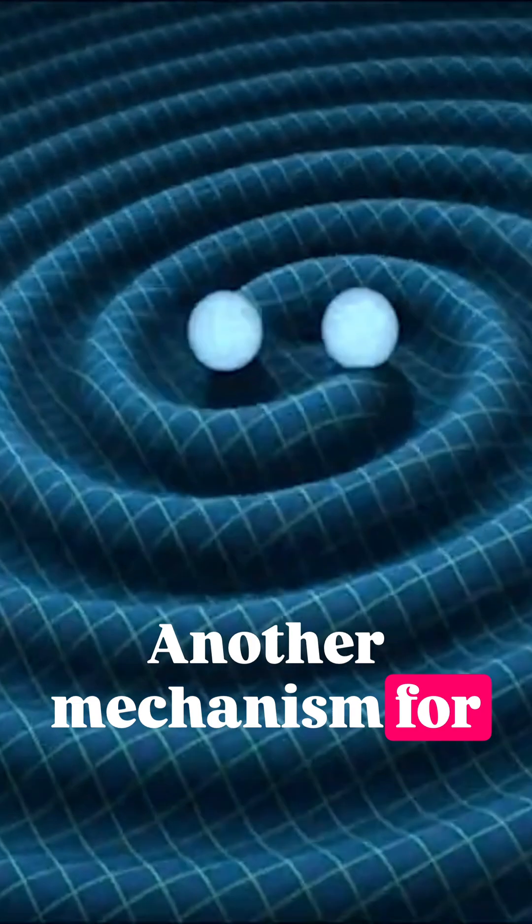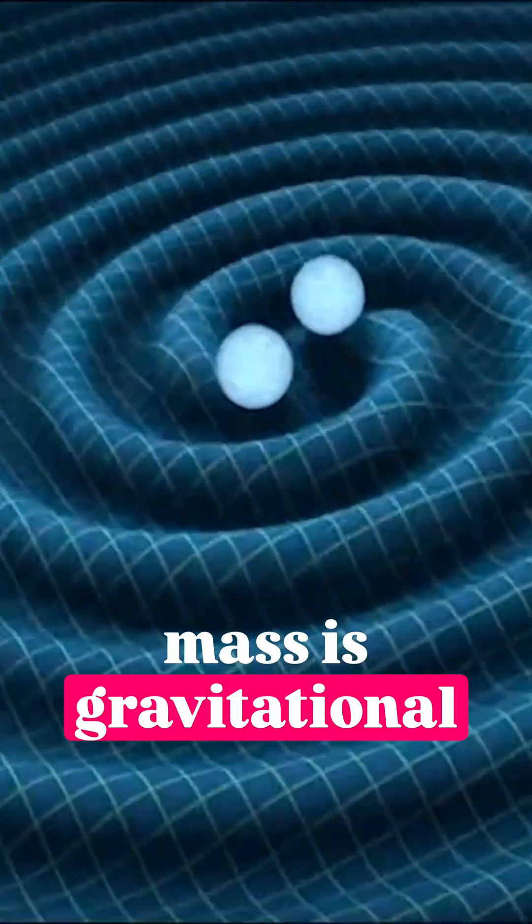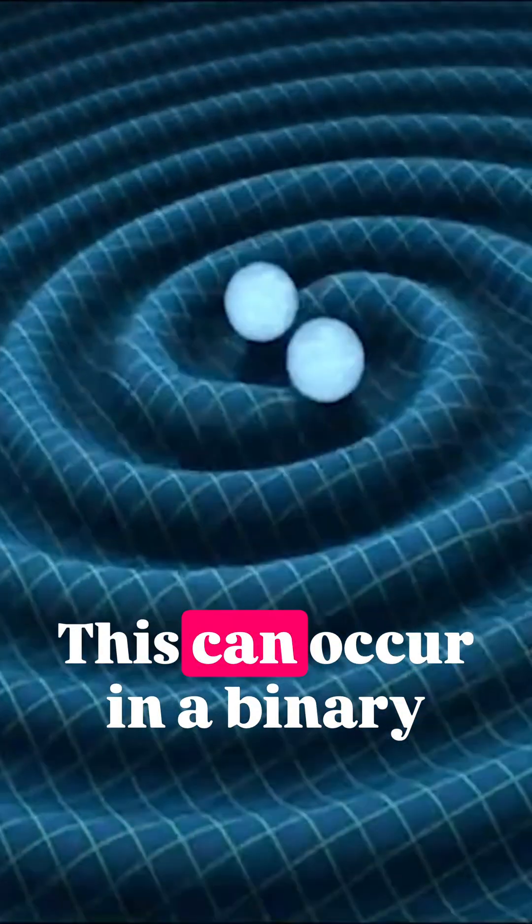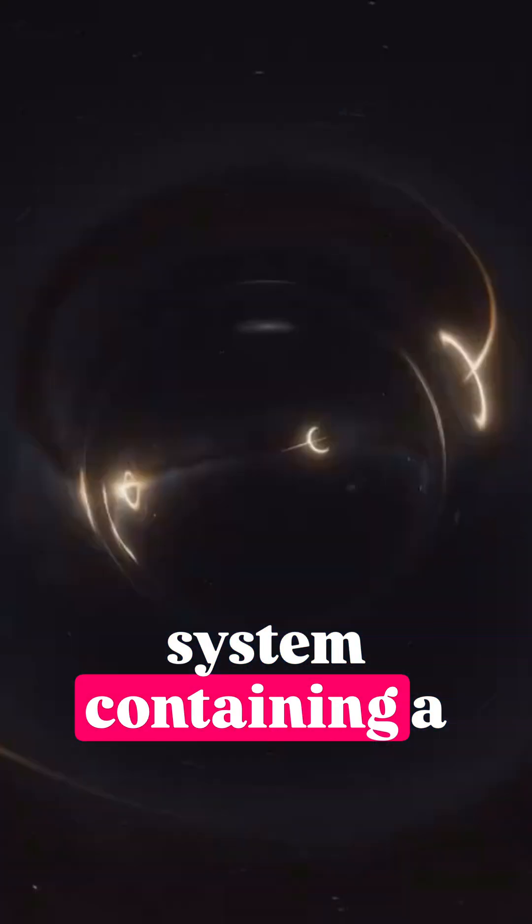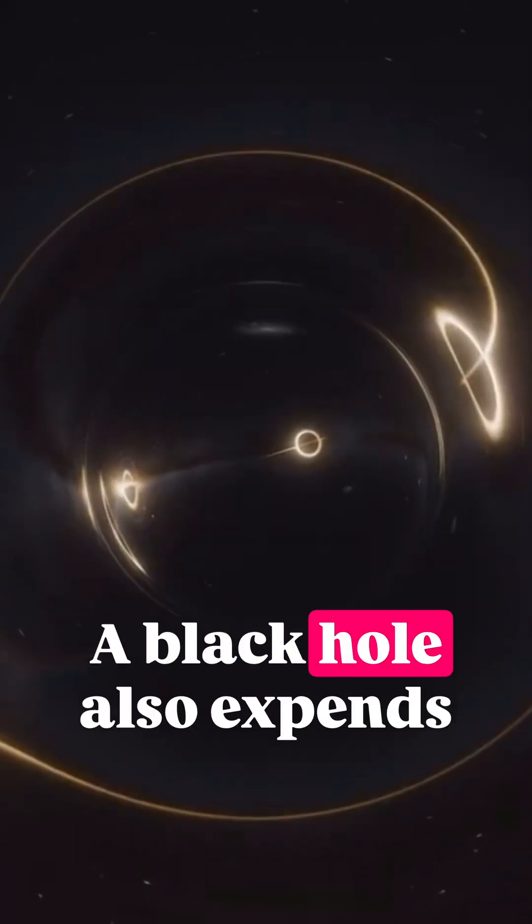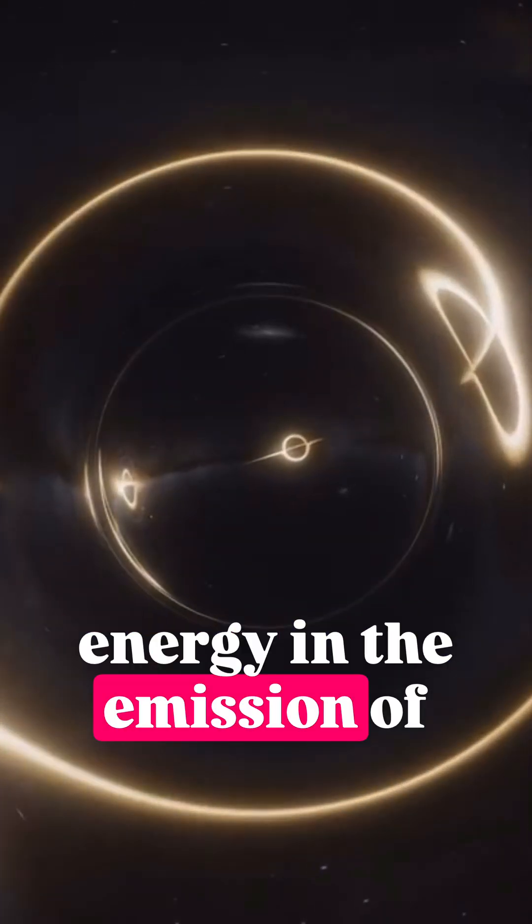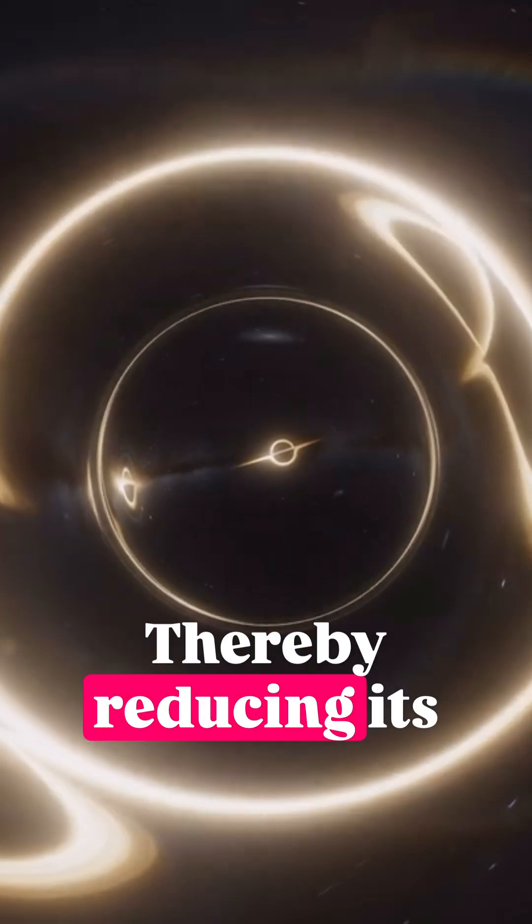Another mechanism for reducing black hole mass is gravitational wave emission. This can occur in a binary system containing a black hole. A black hole also expends energy in the emission of these waves, thereby reducing its mass.